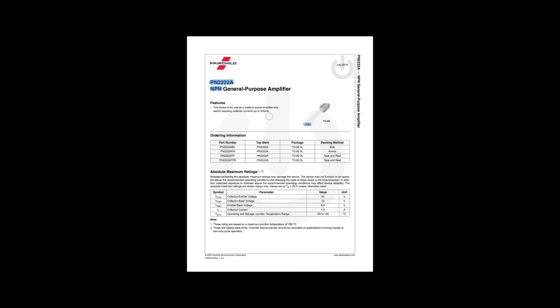Right away we get very important information: this is an NPN type transistor, which tells us how we're going to use it in our circuitry. There's also a schematic showing what the transistor looks like. There's a flat side so you can determine which direction it's oriented, and each pin is mapped out - emitter, base, and collector - which is very important for how we plug it into our circuitry.